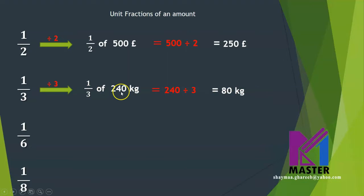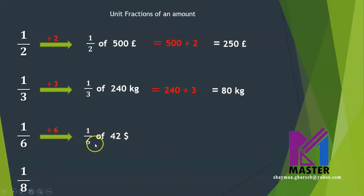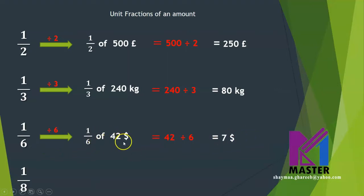So one third of 240 kilograms equals 80 kilograms. What about one sixth? It's exactly the same — it means division by six. So now we divide by six. One sixth of 42 dollars: divide 42 by six, which is the denominator. 42 divided by six equals 7 dollars. So one sixth of 42 dollars equals 7 dollars.